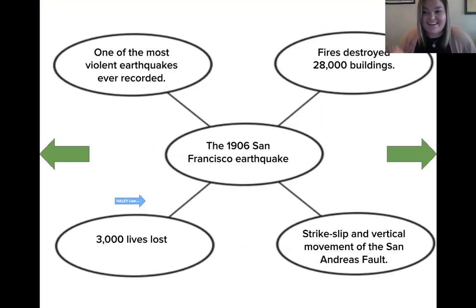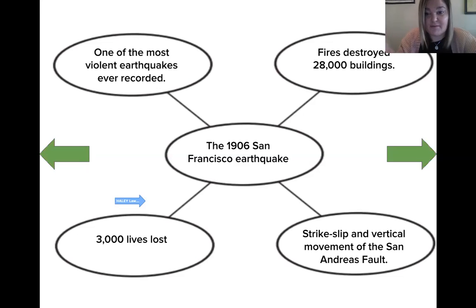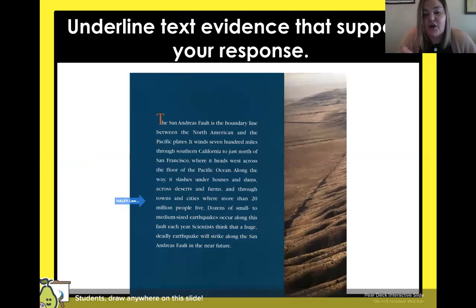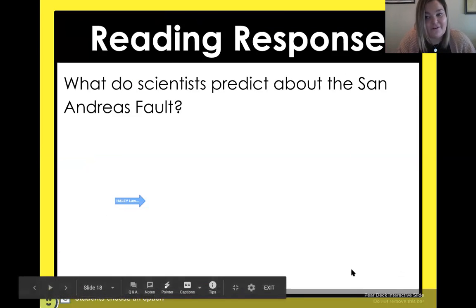Look at that, fourth graders — we made our web! Give yourself a pat on the back. We could now take this web and turn it into a paragraph telling others what we learned, starting with the center — what we're talking about — and then those key details. These webs come in really handy for writing. Now it's time for your reading response: what do scientists predict about the San Andreas Fault? Go to the page, underline the text evidence that supports your response, or write it down. Thank you so much for coming today, fourth graders — I'll see you next time, bye!